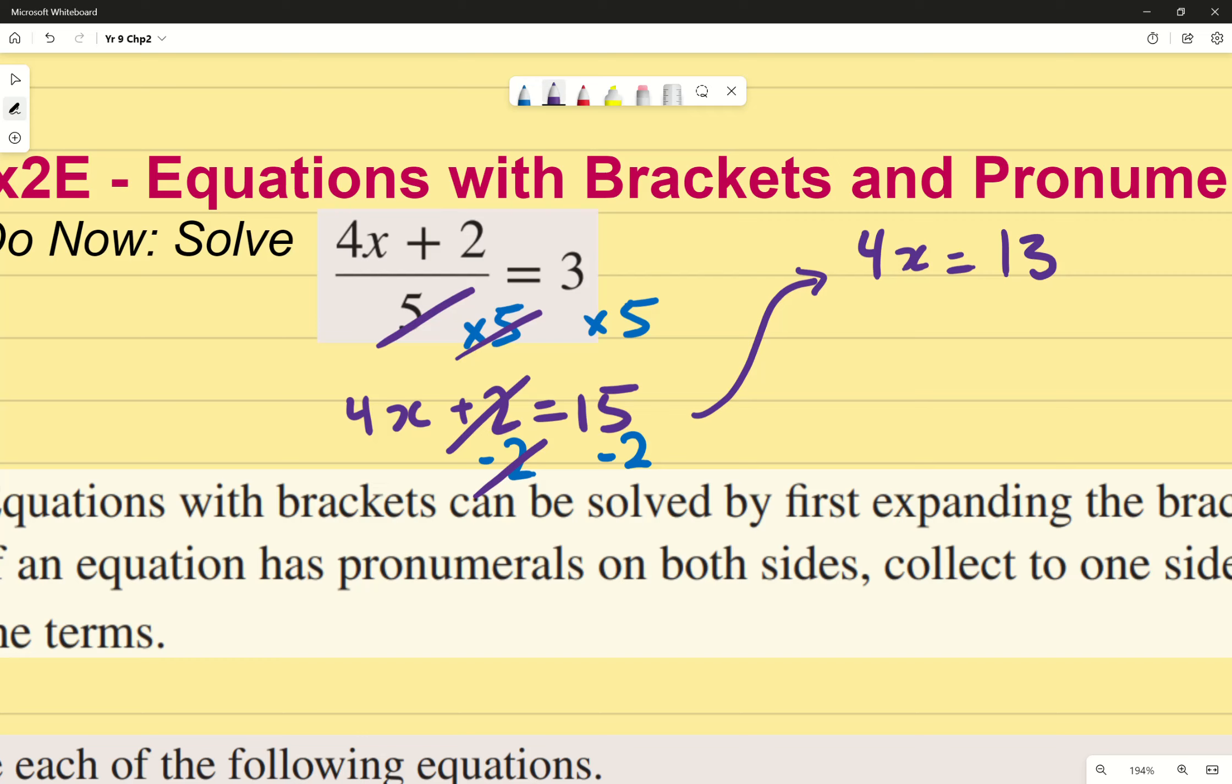4x equals to 15 minus 2, so 15 minus 2, sorry, which gives us 13. And finally because I've got that 4x equals to 13, 4x means 4 times x. I'm going to divide both sides by 4. They cancel out and I end up with x equals 13 over 4.